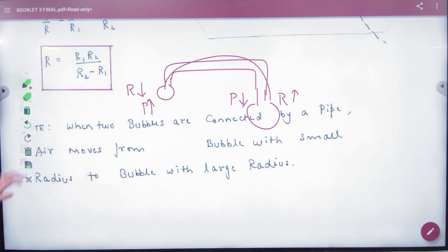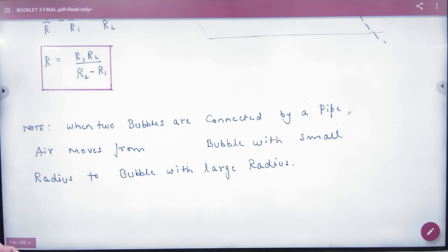So when two bubbles are connected by a pipe, then air moves from a bubble with small radius to a bubble with a large radius. This is the rule.